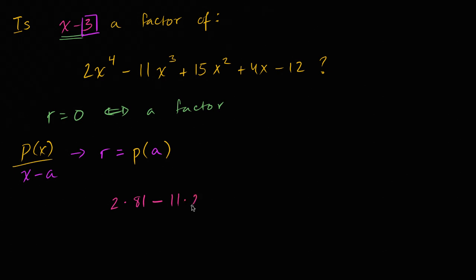but let's power through it. 11 times 27, I probably should have picked a simpler example, but let's keep going. Plus 15 times 9, plus 4 times 3 is 12, minus 12. So lucky for us, those last two terms cancel out. The rest from here is arithmetic.